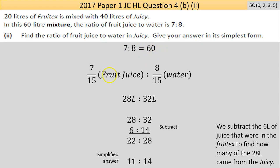In the math: seven-fifteenths is fruit juice, eight-fifteenths is water. Multiply 60 by seven-fifteenths to get 28 liters of juice. Multiply 60 by eight-fifteenths to get 32 liters of water. So the combined mixture has 28 juice to 32 water. Now subtract what the Fruitex contributed: 28 minus 6 gives 22 liters of juice from Juicy, and 32 minus 14 gives 18 liters of water from Juicy. The ratio of fruit juice to water in Juicy is 22 to 18, simplified by dividing by 2 to give 11 to 9.